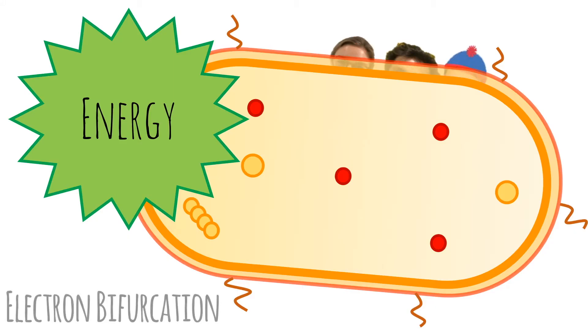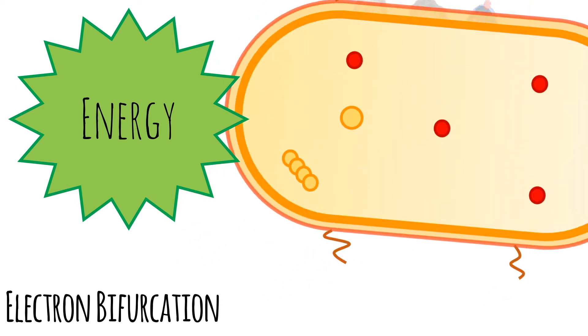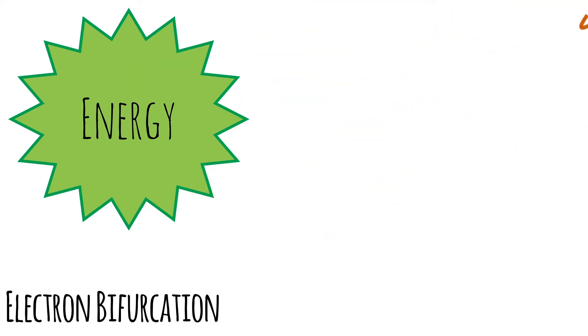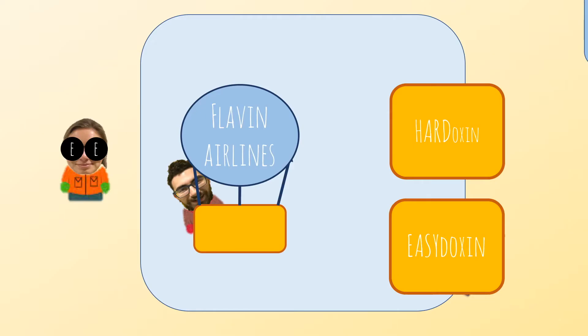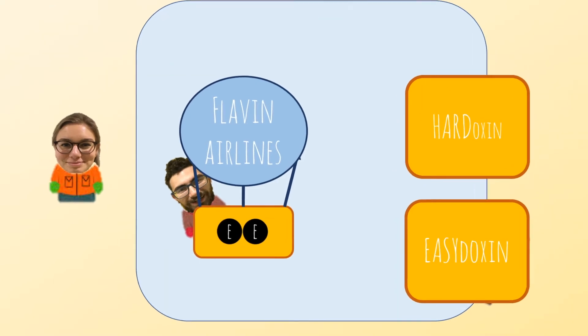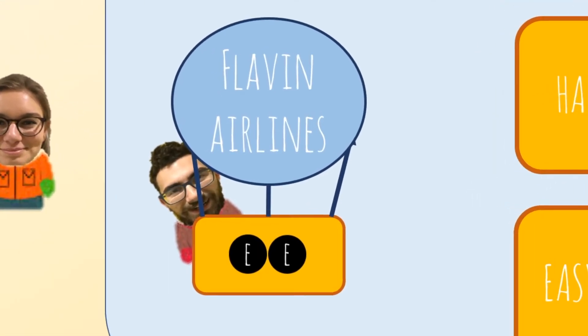The last and recently discovered type of energy transformation is electron bifurcation. So let's see what it really is. This is an enzyme where electron bifurcation takes place. Here, electrons are transferred from a donor to two different acceptors, hardoxin and ecidoxin. This flavin performs the electron bifurcation.